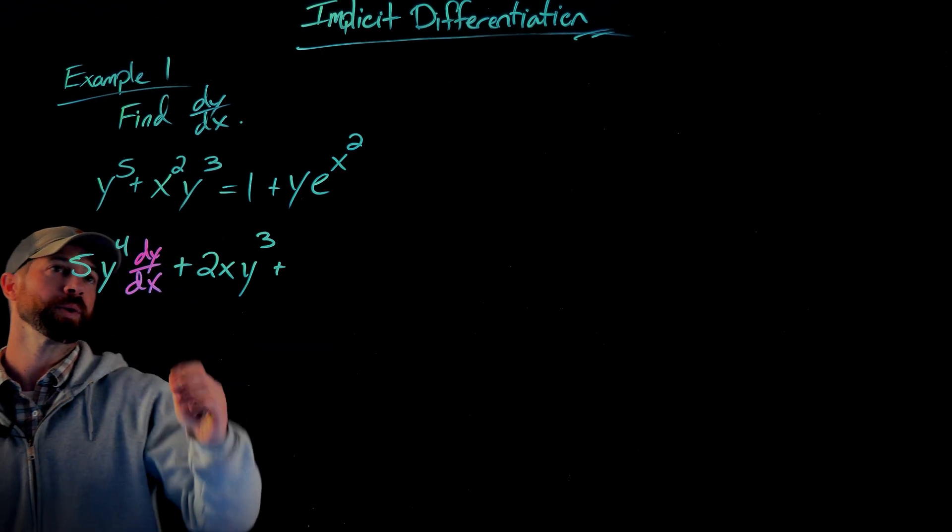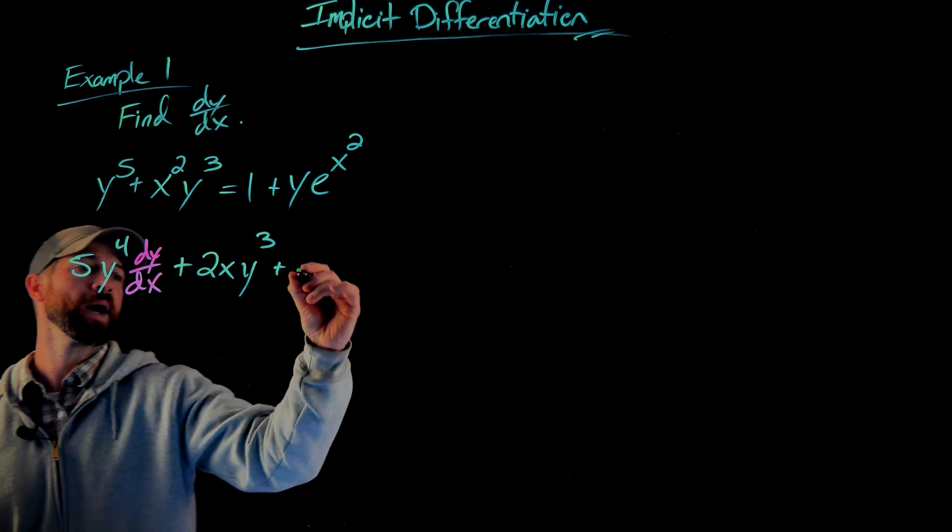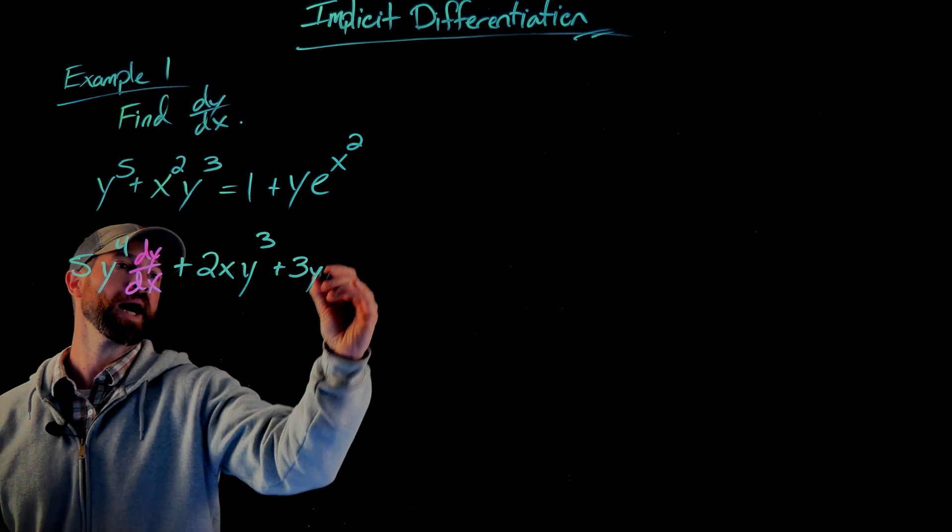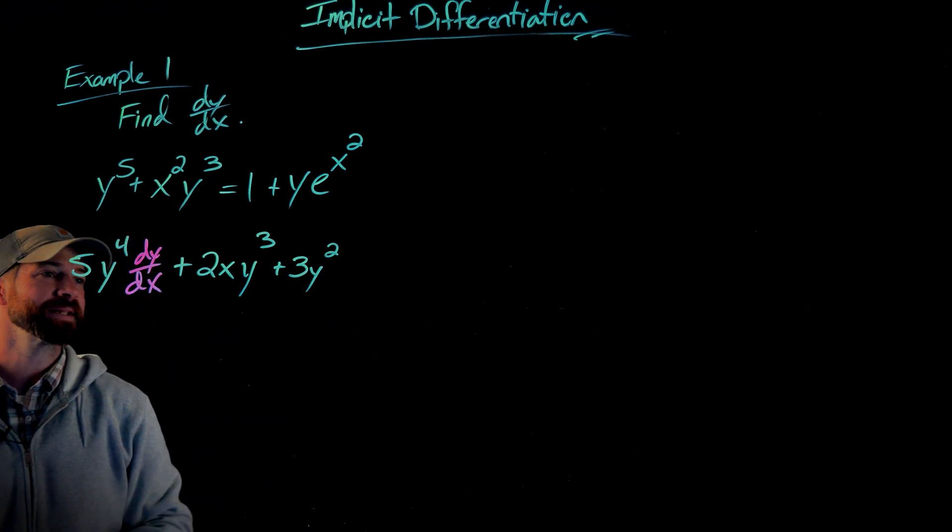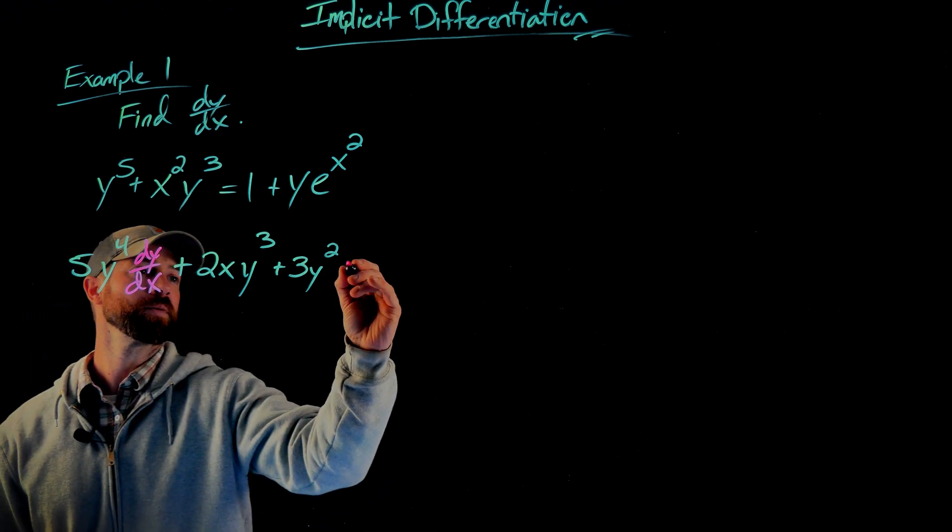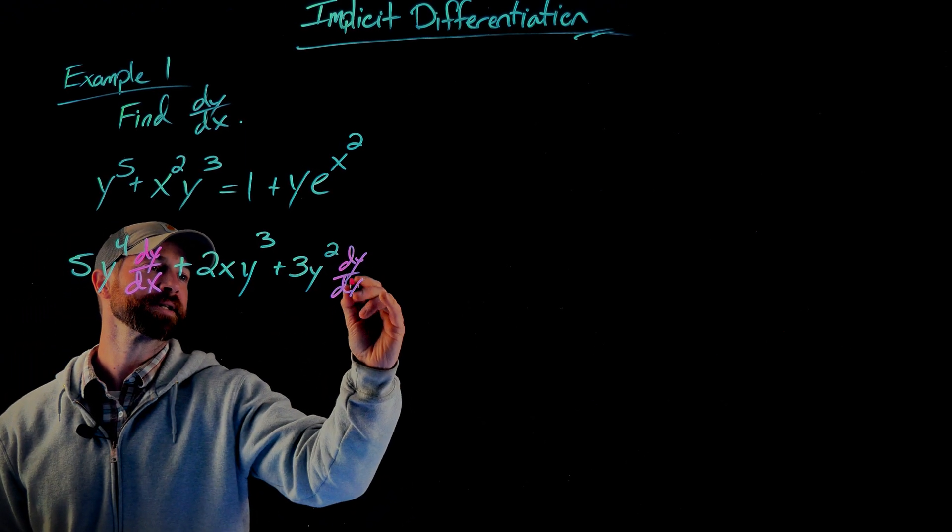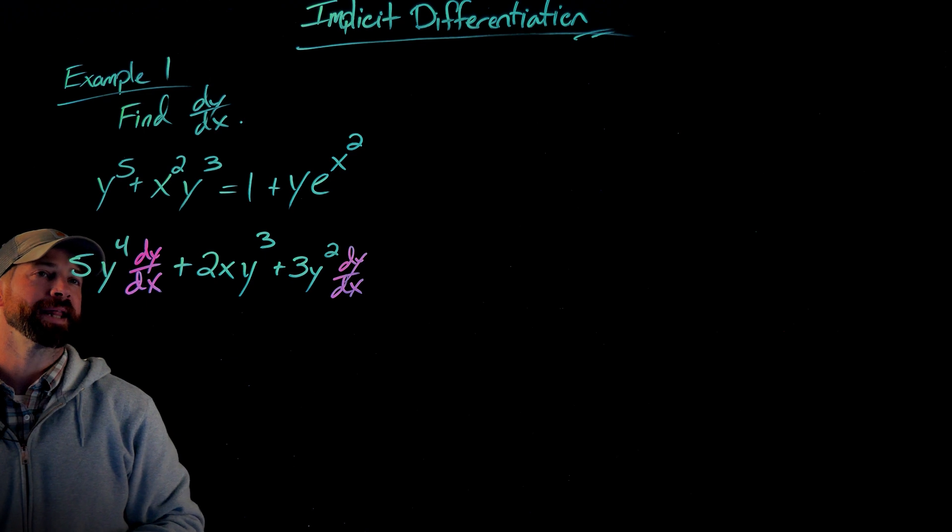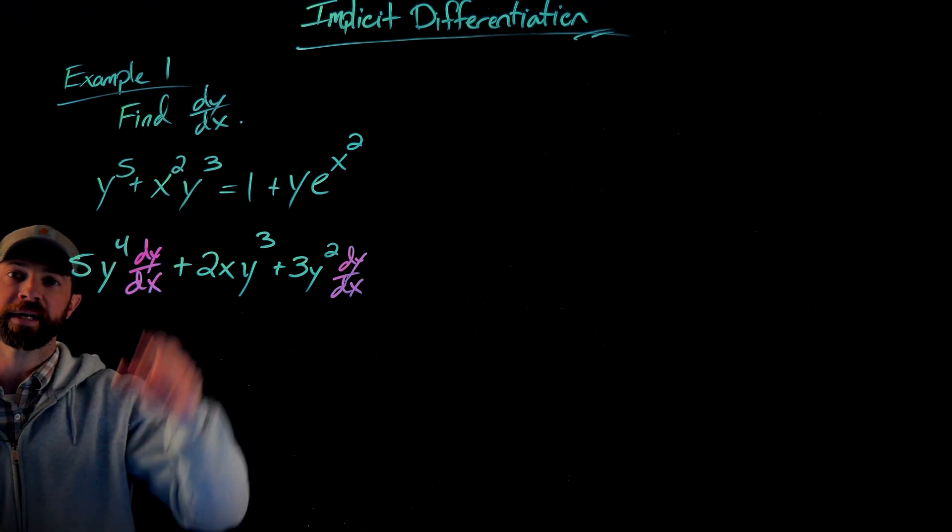Then what we're going to do is differentiate the y cubed. y cubed is 3y squared times the derivative of the inner function here, which is dy/dx. And we're going to multiply that by x squared, not differentiating.